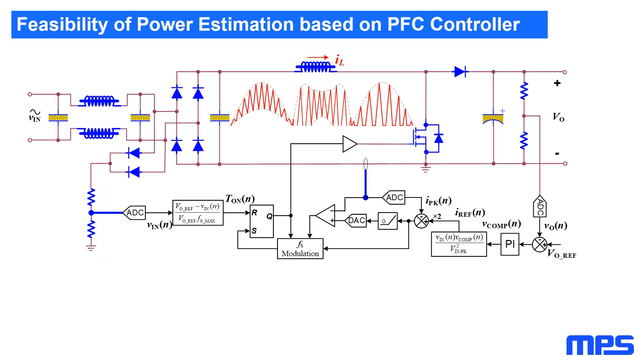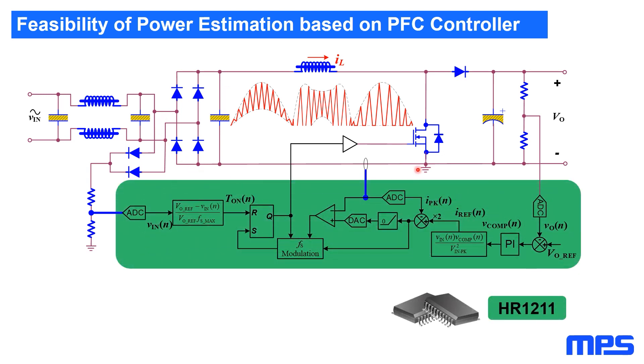We will see why we think it is possible to achieve power estimation without those additional sensors in this paper. This is a boost PFC converter implemented based on current mode controller. Here we take HR1211, a digital multi-mode PFC and LLC combo controller from MPS as an example, to work through the control scheme.